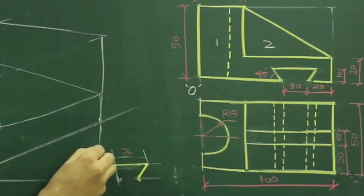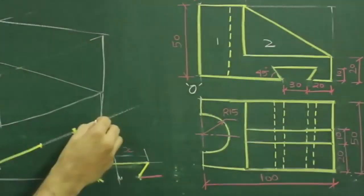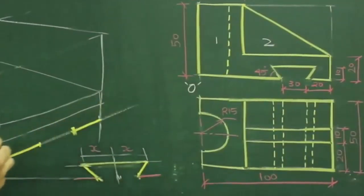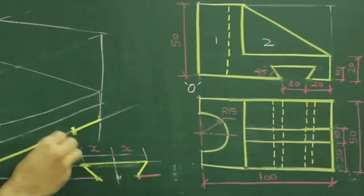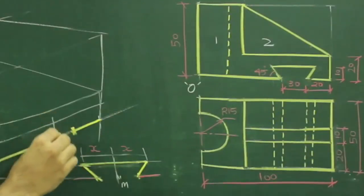Now we are transferring this to the isometric view. We'll transfer the linear distances: 20, 30, and 10 up. We'll mark the midpoint and draw a vertical line.